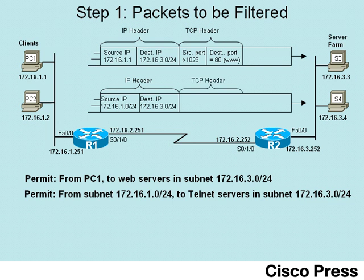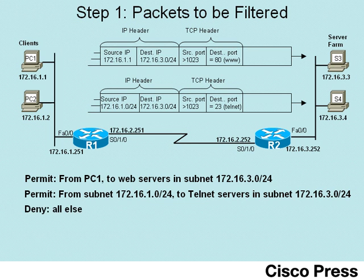Again, looking at the port numbers from the client side, the source port will be dynamically allocated from some number 1024 or greater, and the destination port will use the telnet well-known port of 23. The last criteria for this access list is to deny all other traffic, so we'll use the implied deny all at the end of the access list to catch everything else and discard it.